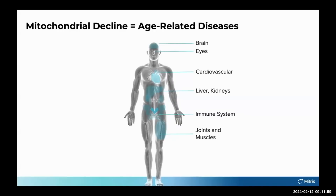Doctors have known for many years that mitochondrial decline as we age is one of the underlying reasons for many diseases. It's very simple: your cells run on energy. When you're 20, that's your peak — your mitochondria are in perfect condition. But that declines as we get older, and there's just not enough energy for the cells to do their job properly.